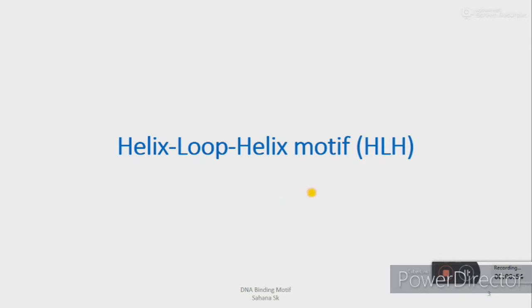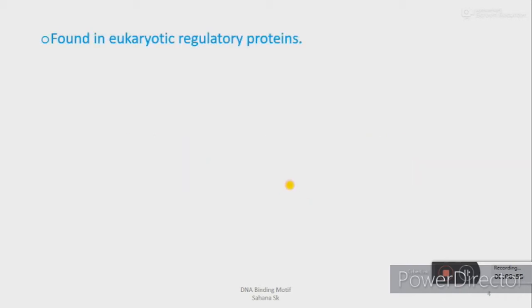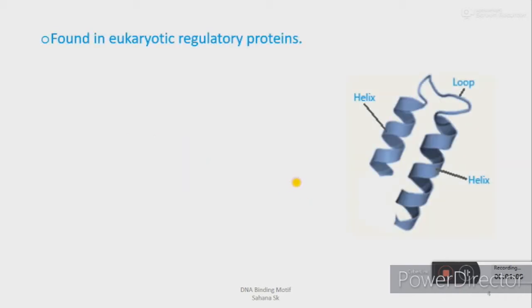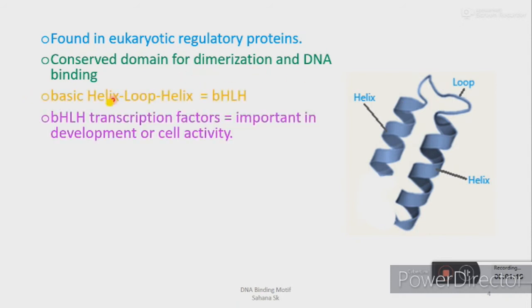Helix-loop-helix motif is another structural motif found in eukaryotic regulatory proteins. These proteins share a conserved domain which is important for both dimerization and DNA binding. Some basic helix-loop-helix transcription factors are implicated in the control of gene expression in development and cellular activity of multicellular organisms.